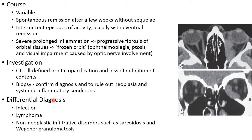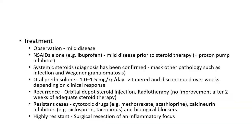The differential diagnosis of IOID includes infection, lymphoma, and non-neoplastic infiltrative disorders such as sarcoidosis and Wegener's granulomatosis. Regarding treatment, for mild disease, observation alone can be done, or mild disease can be treated with NSAIDs alone, such as ibuprofen.